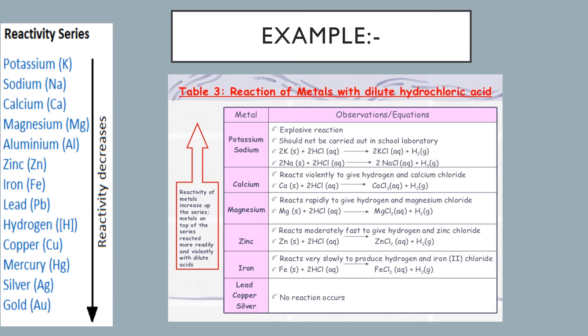This kind of reaction is a single displacement reaction. Potassium is above hydrogen in the reactivity series, meaning potassium is more reactive than hydrogen. So potassium displaces hydrogen from the acid to form potassium chloride and hydrogen gas. The metals which are more reactive than hydrogen displace hydrogen from dilute acid.